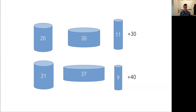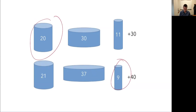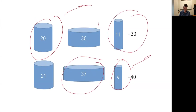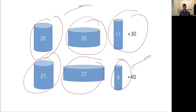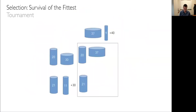Now the next step was selection — survival of the fittest. The first approach I'll talk about is a tournament. We randomly assign members into pairs, then do a tournament: compare them and the best one wins. So 37 is less than 49, so the 37 wins; 20 is less, so that wins; 21 is less, so that wins. Then we do it again — randomly create pairs and do another tournament. This approach means every member of the population is going to reproduce either zero, one, or two times. The worst member of the population is guaranteed to be eliminated, and the best member is guaranteed to appear twice.